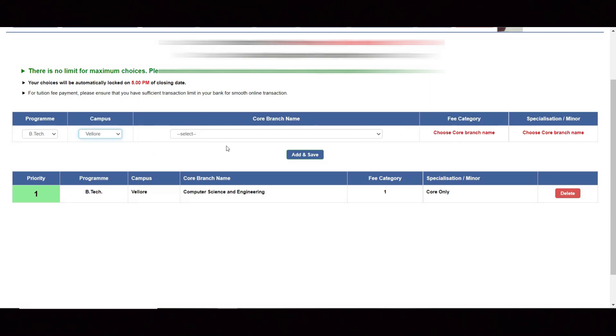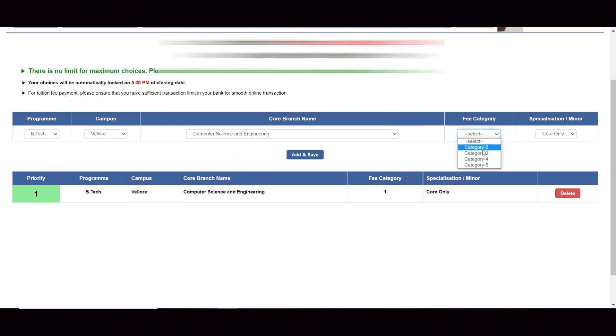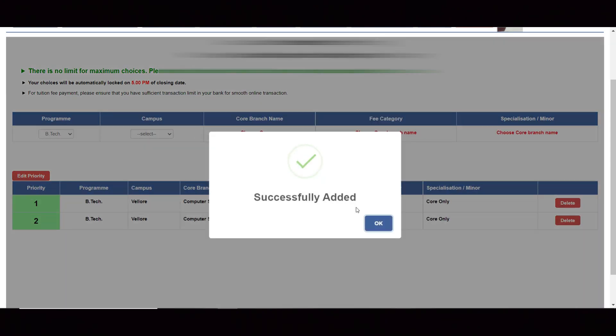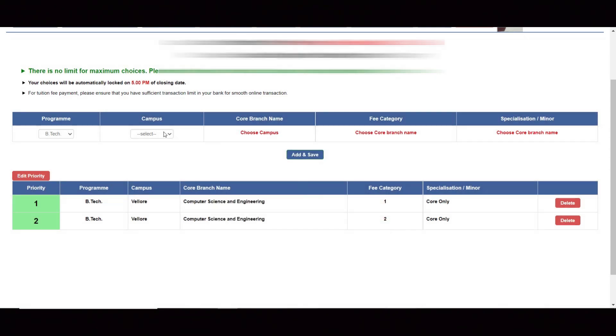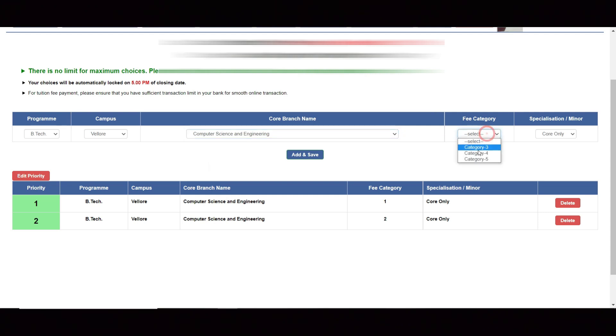Again, this process is somewhat lengthy. Come to CSE and category 2, then add and save. If you want only core CSE, then fill like this. If you are only interested in core, then give like this with category 3.